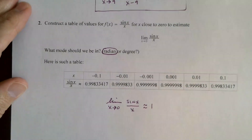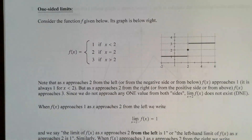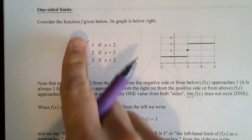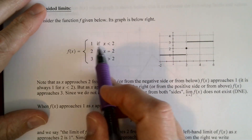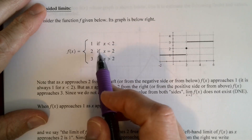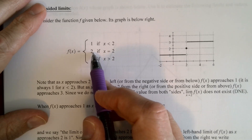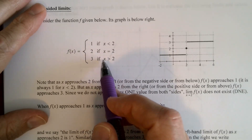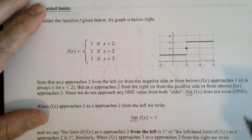Moving to graphical limits, I want to look at what we call one-sided limits with this particular piecewise defined function. If the value of input x is less than 2, the output is always 1. If the input is exactly 2, the output is 2 — so f of 2 is equal to 2. And if the input is greater than 2, the output is always 3. Here's the graph of the function.